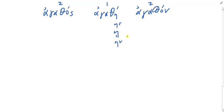Reading through the neuter forms: agathon, agathou, agathō, agathon, agatha, agathon, agathois, agatha. Anything unusual? Nothing at all — this is straightforward and follows known patterns perfectly.